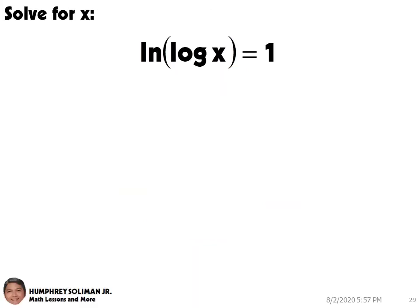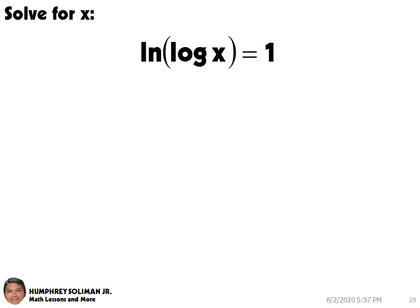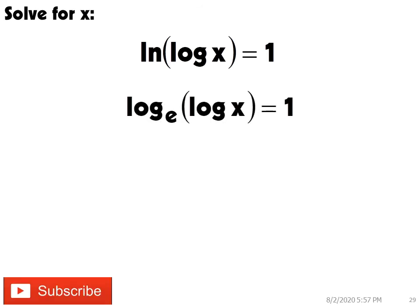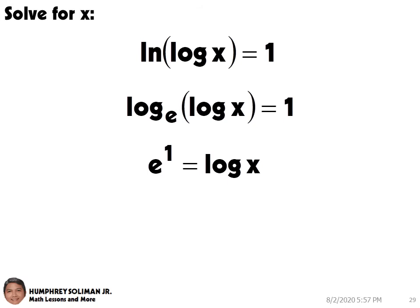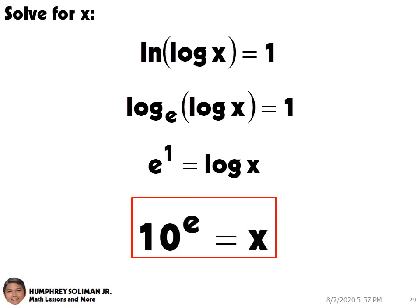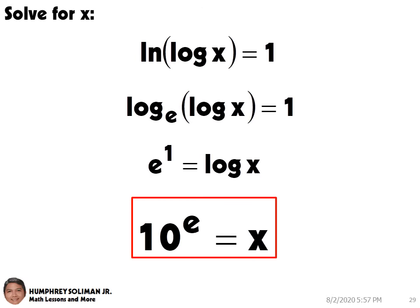In our next example, we need to solve for x. ln of log x equals 1. We can write ln as log base e. And then, write this as an exponential equation with the base e. Next, we still have a logarithmic equation which can be written into an exponential equation, this time with the base 10. So, x equals 10 raised to the constant e.